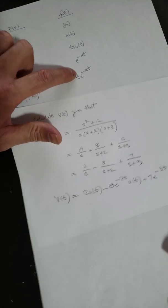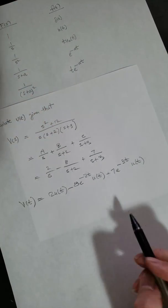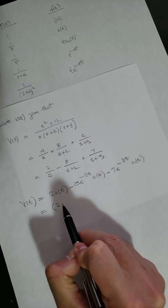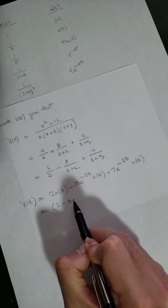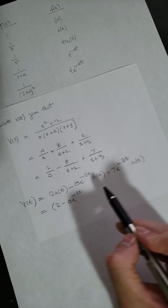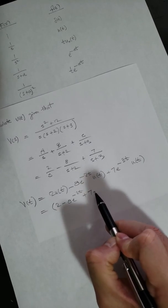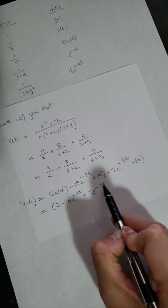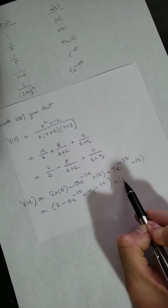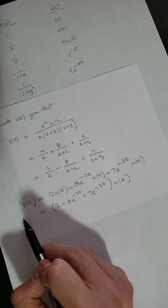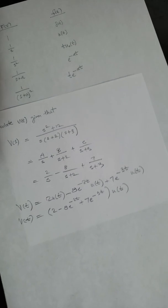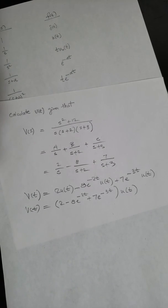Now you can clean things up a little bit by factoring out the u(t). And there you go, voila! Simple, right? Good luck.